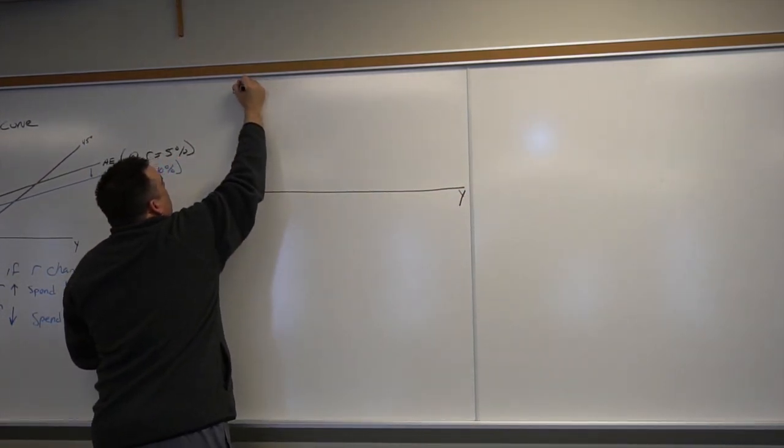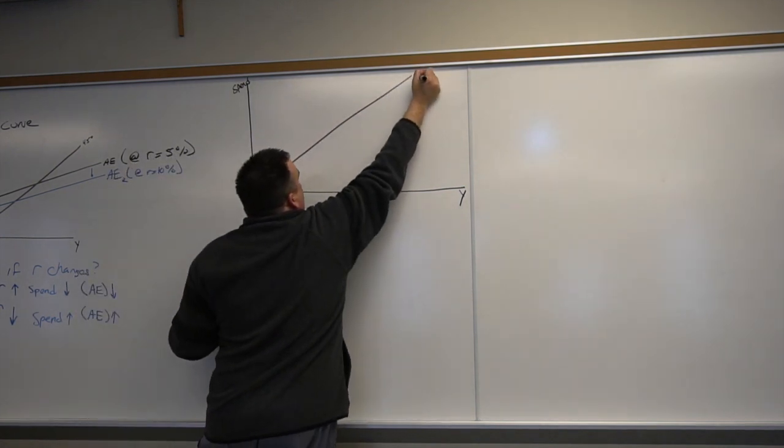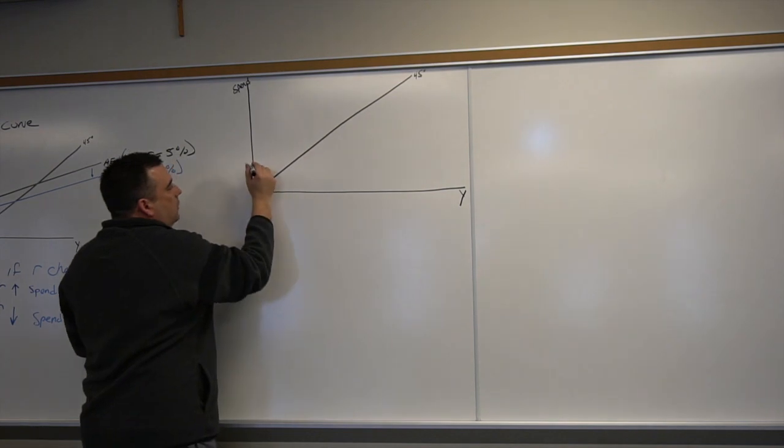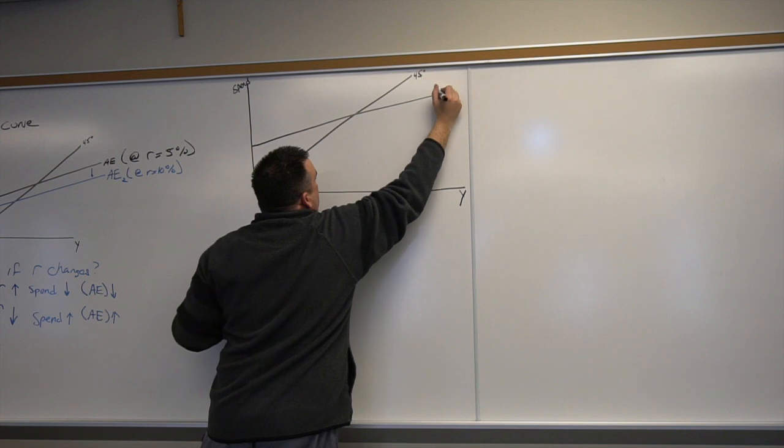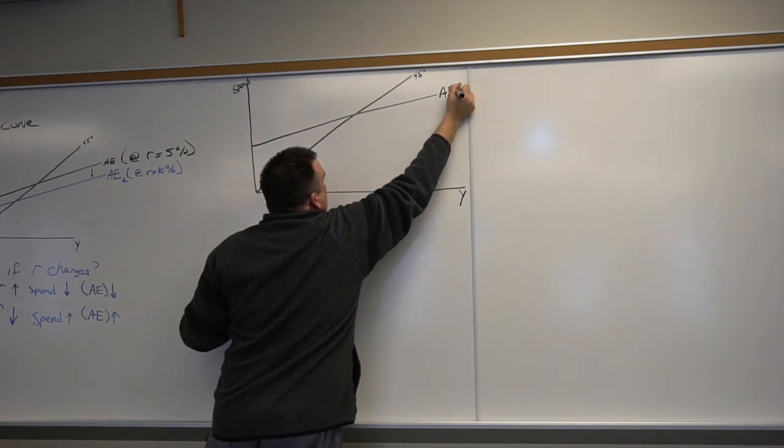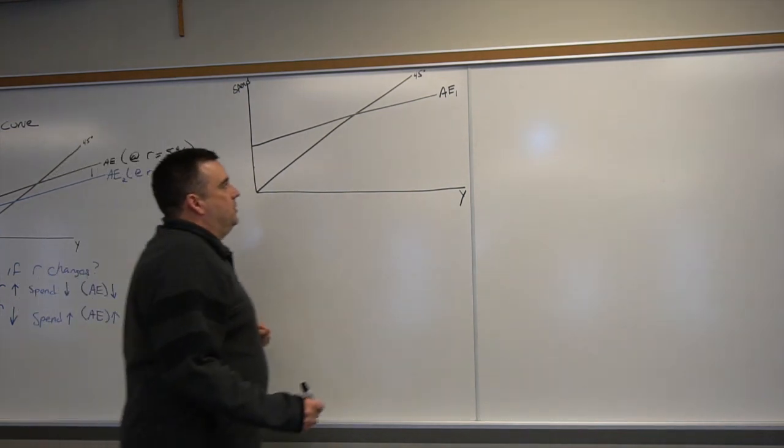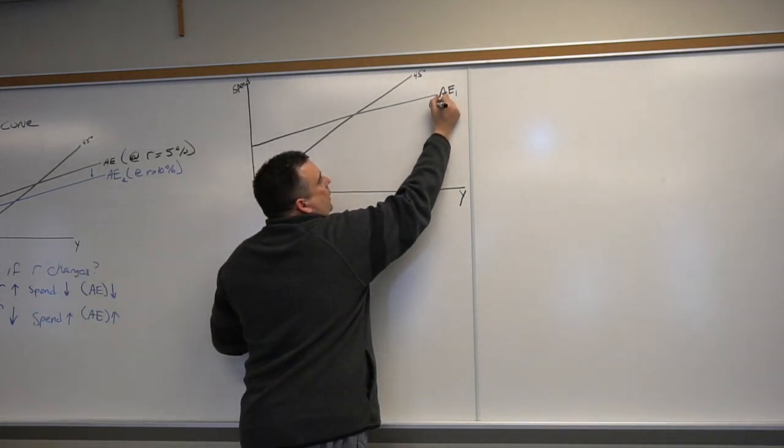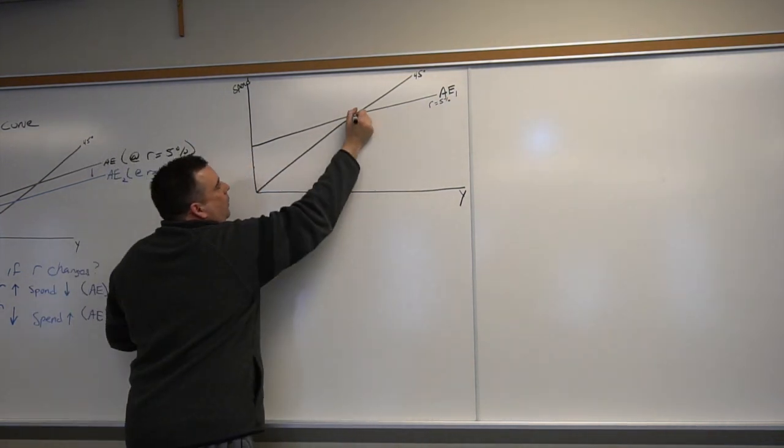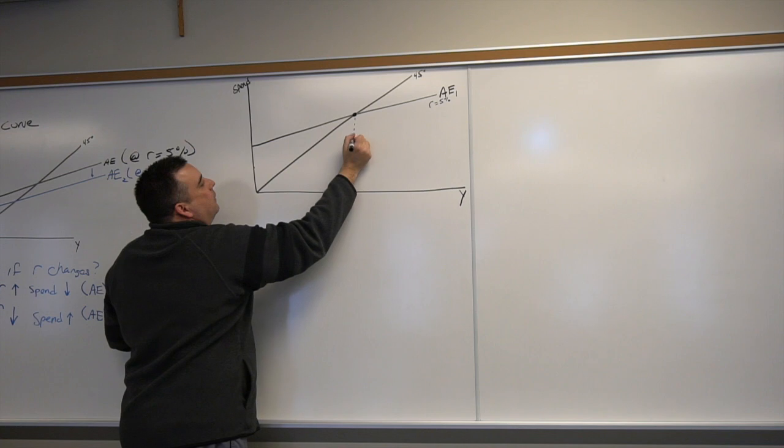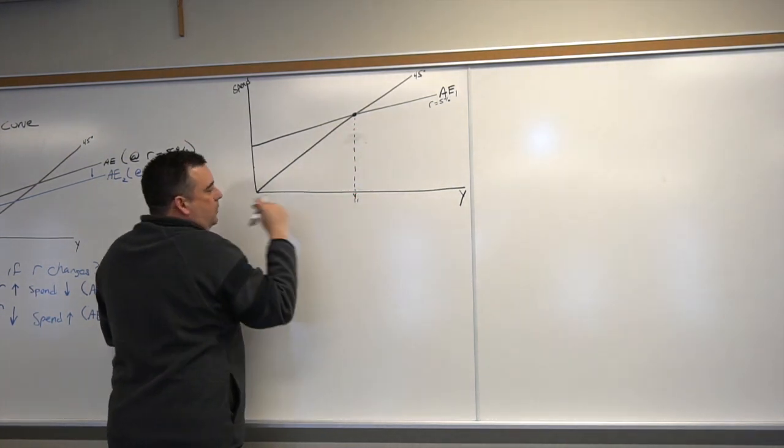Give me a minute to redraw. So I have Y, spending, 45 degrees. We'll go kind of higher up just so it'll be easier to see. Here's our AE1, and AE1 was going to occur at an interest rate of 5%, R equals 5%. I didn't do it on this other graph but I want to do it now - I want to go ahead and give me a Y value for that. So there's Y1.